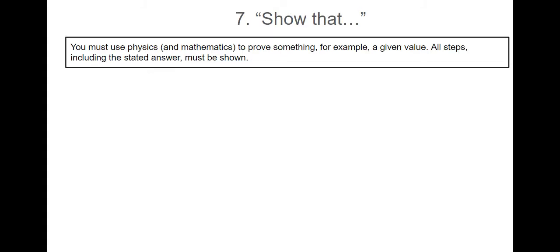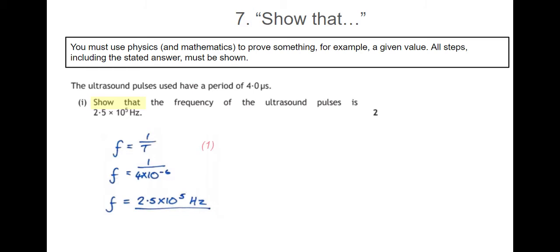Number seven, show that. In a show that question, you must use physics and mathematics to prove something. For example, a given value, all steps included in the stated answer must be shown because you have to show that. So for example, the ultrasound pulses used have a period of four microseconds. Show that the frequency of the ultrasound pulses is 2.5 times 10 to power 5 Hertz. So I take my formula F equals one over T straight from the formula sheet. I insert the number four microseconds into that formula and write down my answer. And that gets me two marks. I will only get that second mark if I've written the final answer, even though the final answer is given in the question. And I need to have the formula written down as well. Just jumping straight into the working is not acceptable.